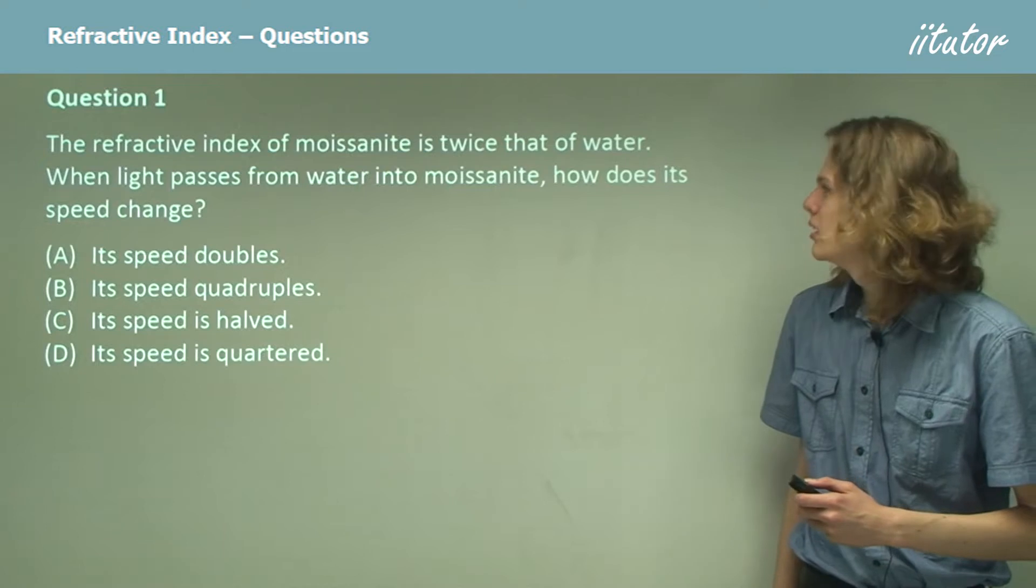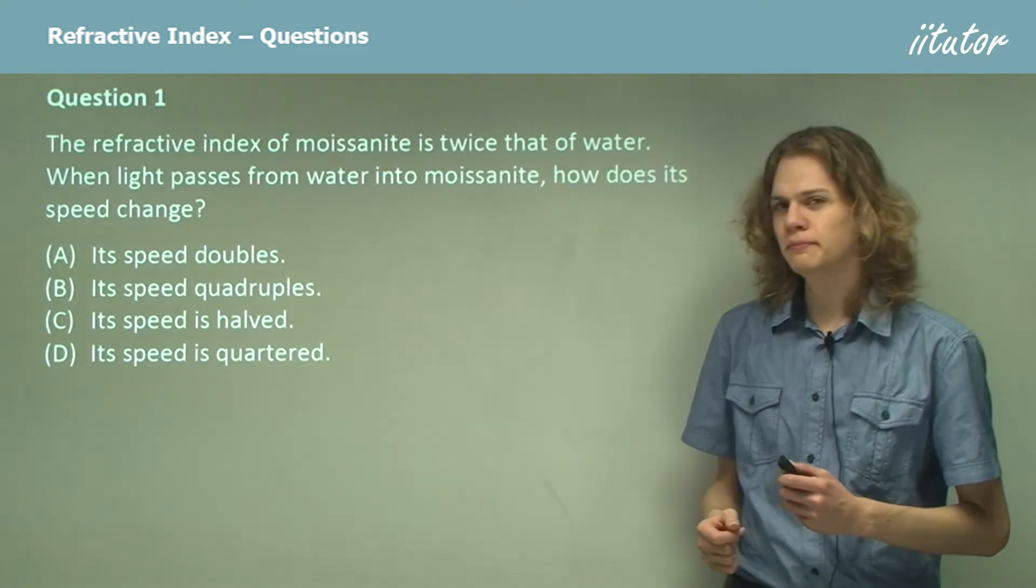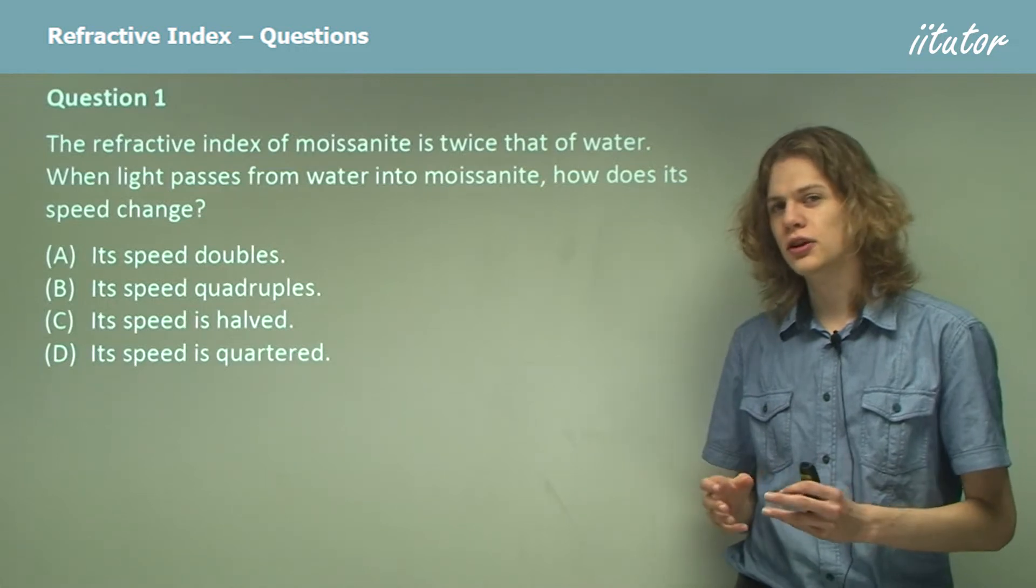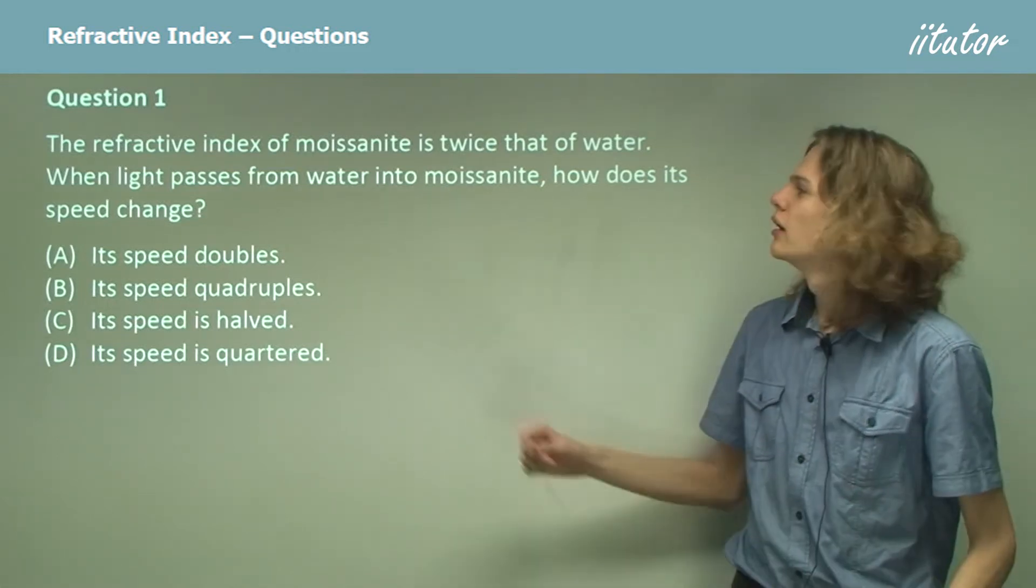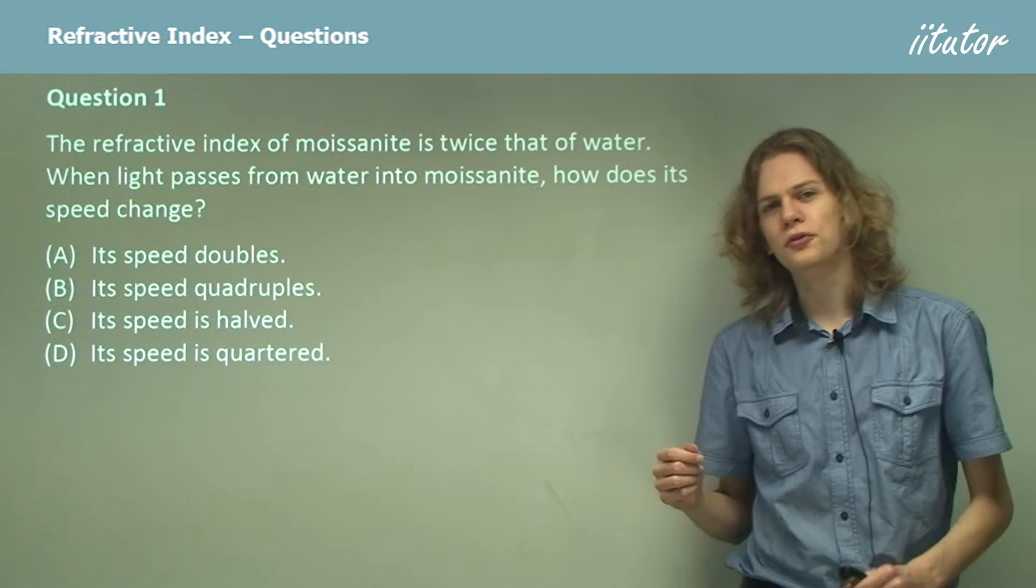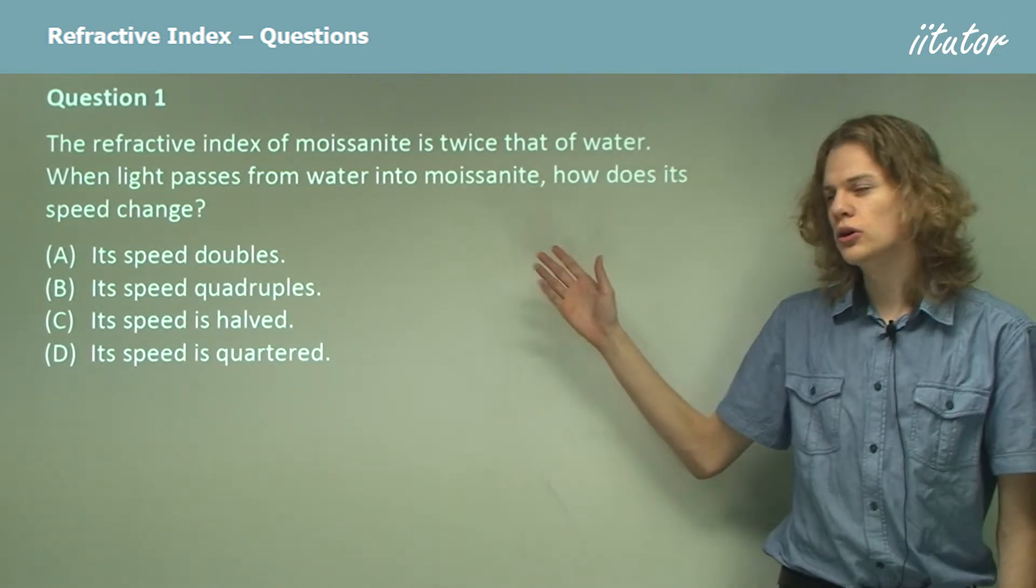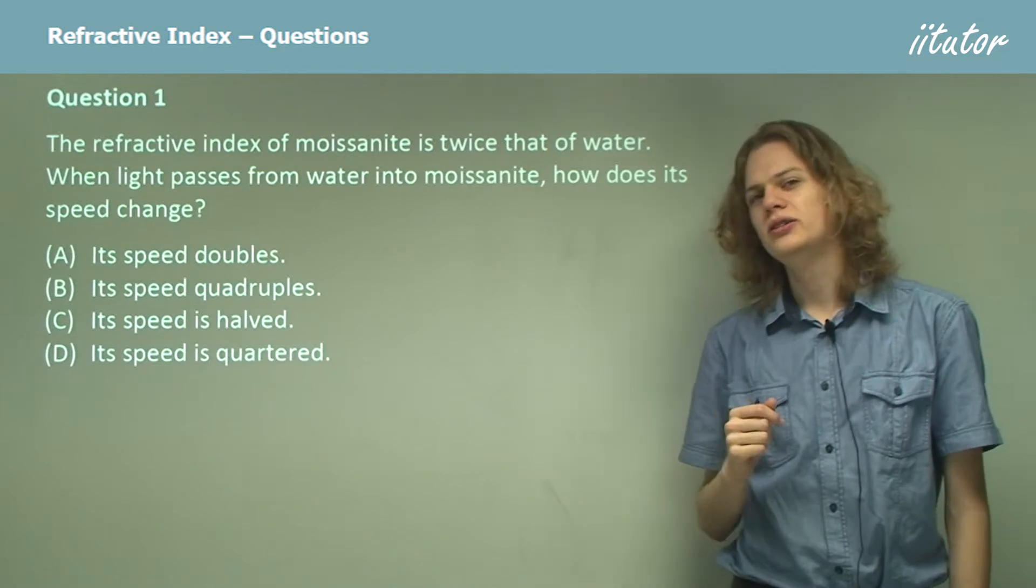Question one. The refractive index of moissanite is twice that of water. So if we know that water has a refractive index of about 1.3, then moissanite must have a refractive index of about 2.6. So when light passes from water into moissanite, how does its speed change?